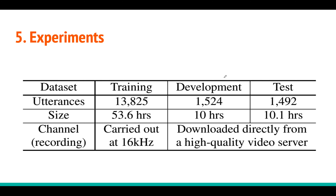Now coming to the experiments. The dataset is MGB3, which is open source for the research community — you can download it and publish your results. The training set has 53 hours of data, 10 hours of development, and 10 hours of test data. The audio is sampled at 16 kHz.